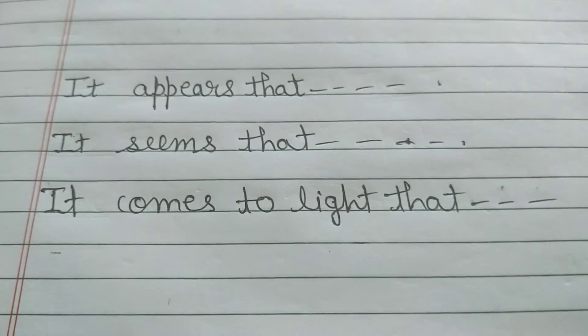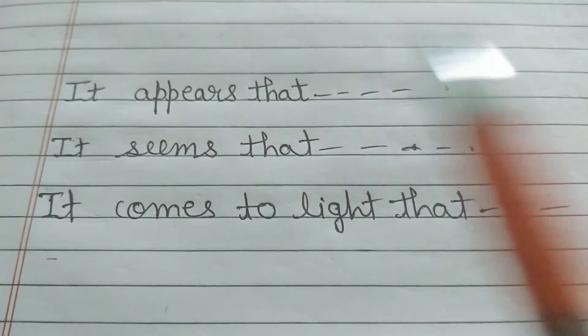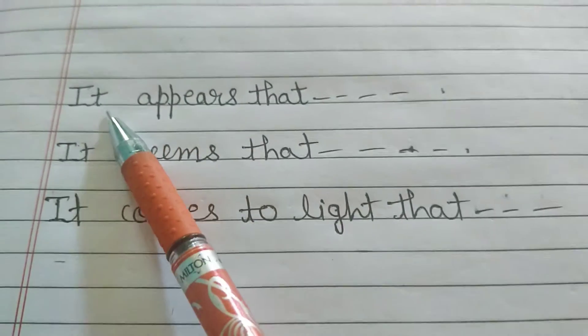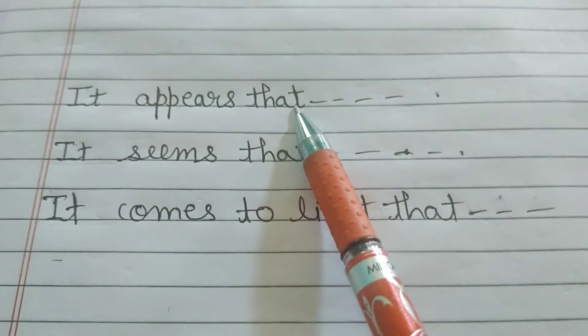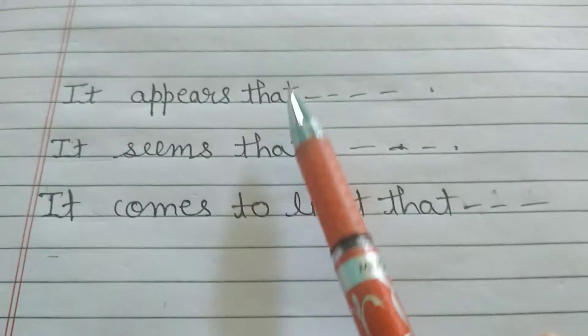So in writing task 2, sometimes we have to write about 'it appears that.' Sometimes we have to write 'it appears that' sentences. You have to write your main idea or topic line.